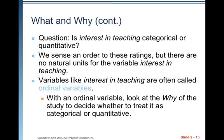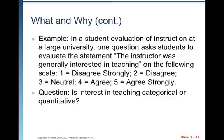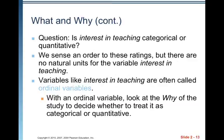We sense an order to these ratings, but there are no natural units for the variable interest in teaching. For instance, we don't know exactly how to measure disagree strongly or disagree as far as interest in teaching. There's no universal way to measure that. Variables like interest in teaching in this case are often called ordinal variables. There's an order to the categories that you choose with an ordinal variable.